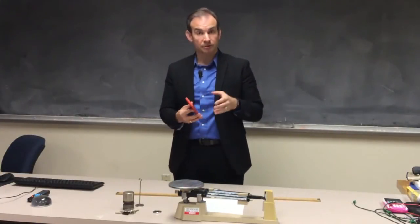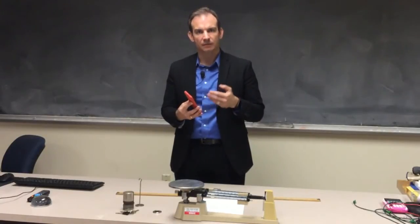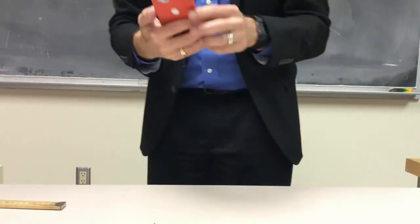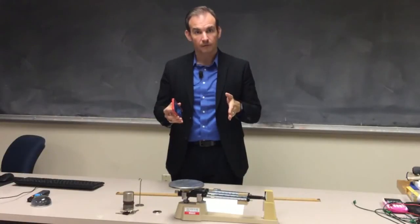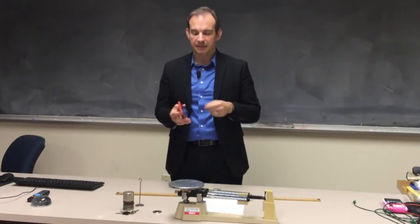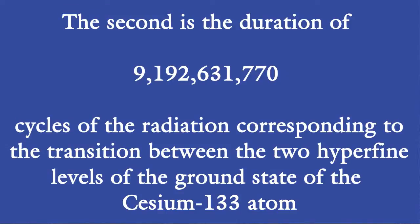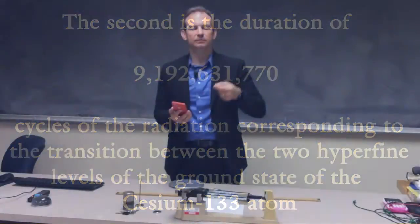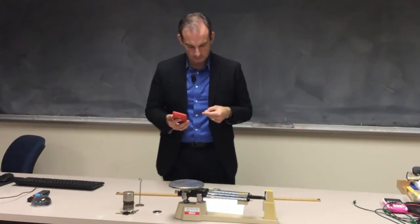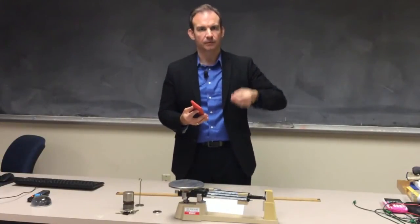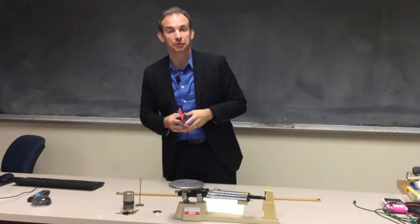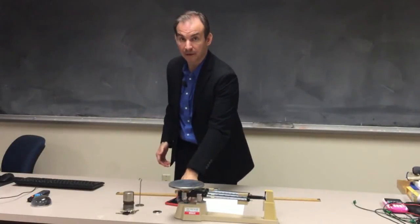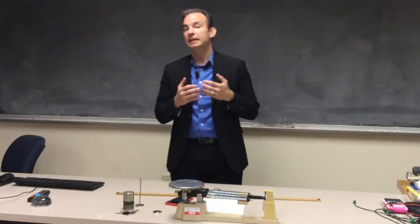As of 1997, the standard of time was altered to use the behavior of an atom of cesium-133. The second is defined as the duration required for a cesium-133 atom to execute 9,192,631,770 transitions between two well-defined energy levels. That cycling between energy levels is insensitive to temperature, pressure, and changing definitions of a solar day as planetary motion evolves — making it much more reliable.